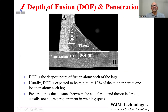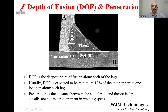Another source of confusion is the terms depth of fusion and penetration. Depth of fusion is how deep the fusion has gone into part A or part B. The requirement is typically that depth of fusion should be at least 10% of the thickness of the thinner component at at least one location. Penetration, by contrast, is the distance from the theoretical root to the actual root. These two terms are often used interchangeably, which can cause a lot of confusion.